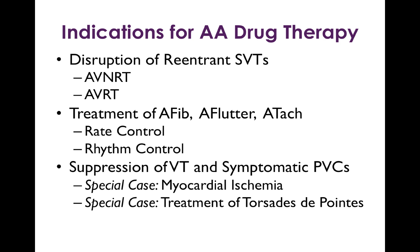What are the indications for antiarrhythmic drug therapy? I've grouped them into three big-picture categories. The first is disruption of certain reentrant supraventricular tachycardias — that is to say, atrioventricular nodal reentrant tachycardia and AV reentrant tachycardia. Second is treatment of atrial fibrillation, atrial flutter, and the related rhythm abnormality atrial tachycardia, for which there are two major strategies: rate control and rhythm control. Third, the major indication is to suppress ventricular tachycardia and to treat symptomatic premature ventricular contractions.